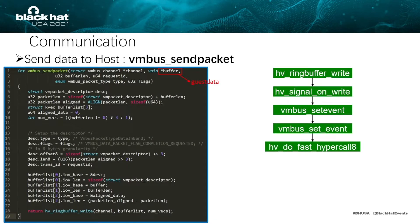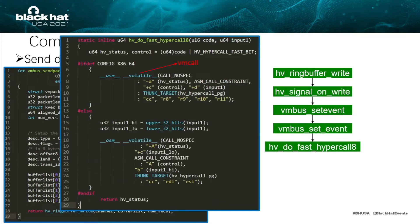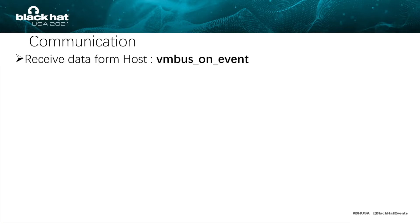The VMBus send packet function is used to send guest data to the host. On the right is the calling chain of this function. DoFastHyperCall will execute the VMCall instruction and the hypervisor will follow a VMExit event.